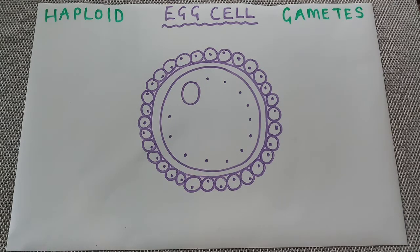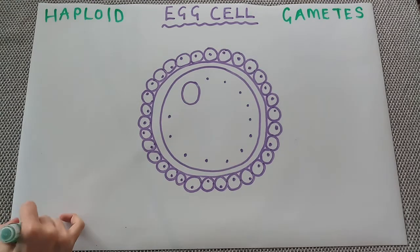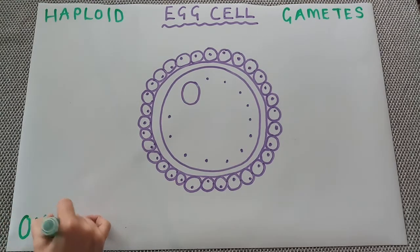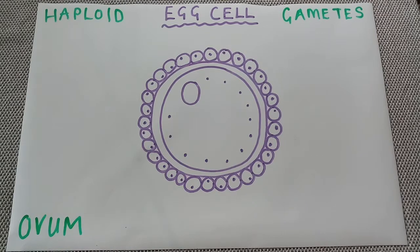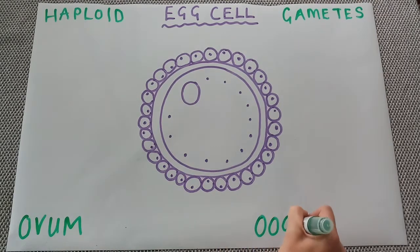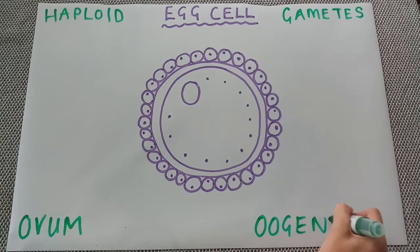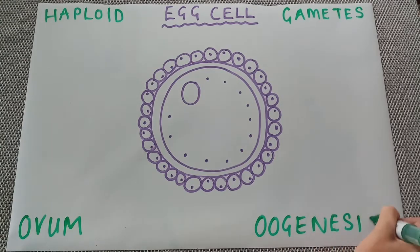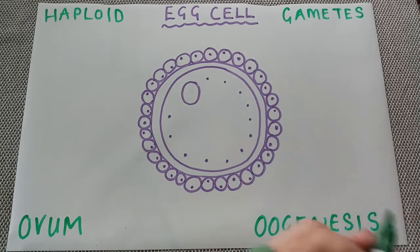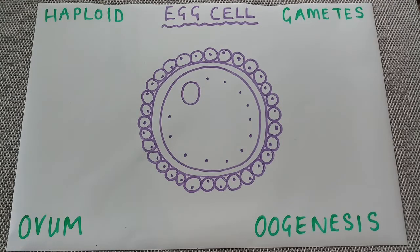The scientific name for an egg cell is an ovum. They are formed in a process called oogenesis, which happens inside a female's ovaries. This is a process we will go through in a separate video later on.